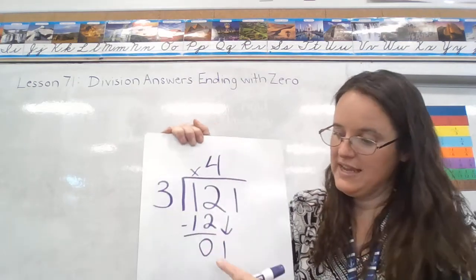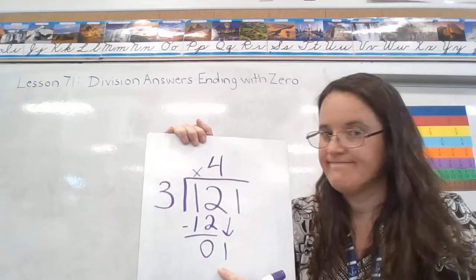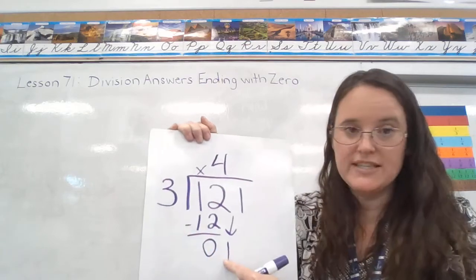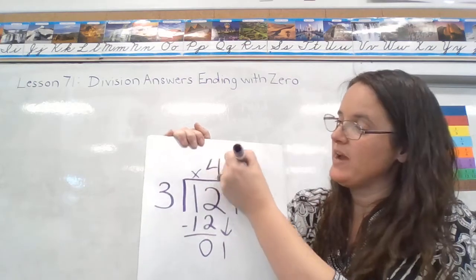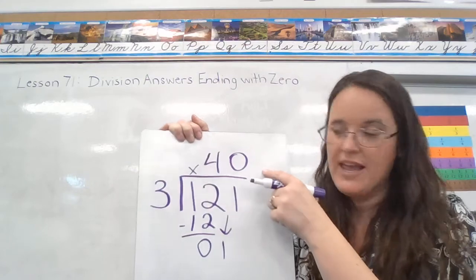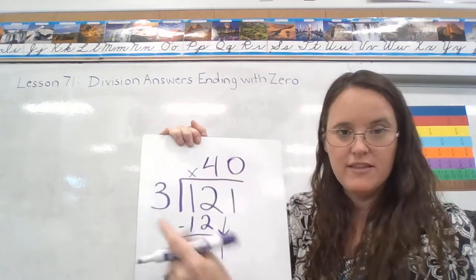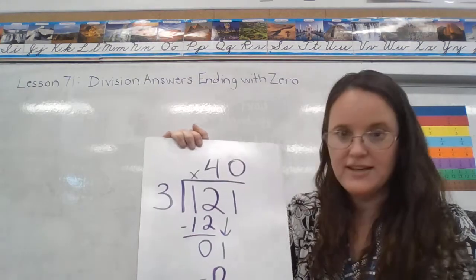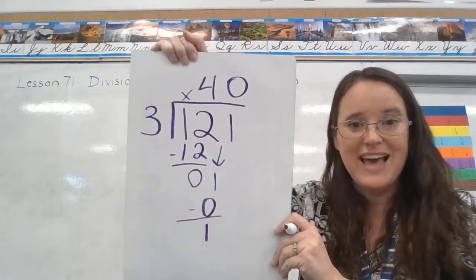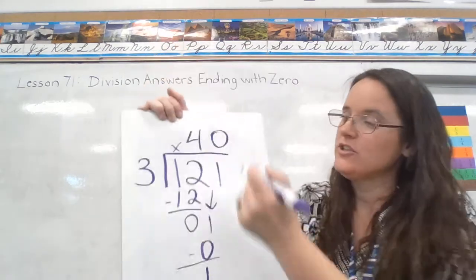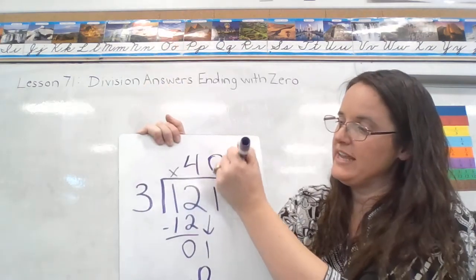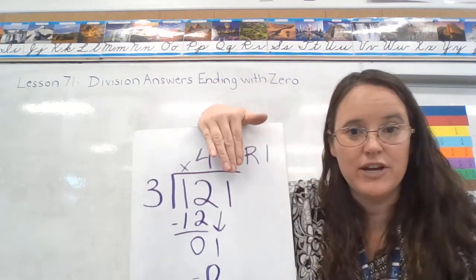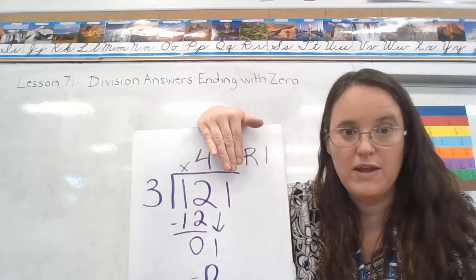Can three go into one? No, I don't have enough ones. So three goes into one zero times. We have to write the zero up here. And then we multiply three times zero is zero. We subtract. Oh, sorry, you can't see that. We subtract, and now you have a remainder. So our answer is 40, remainder one. Again, that's very different from four, remainder one.